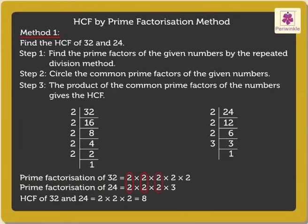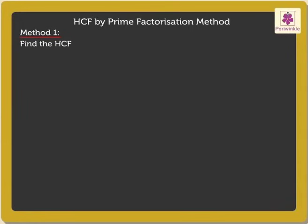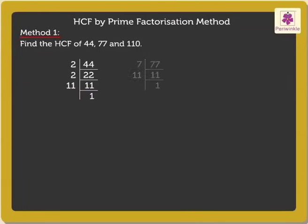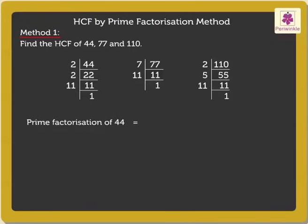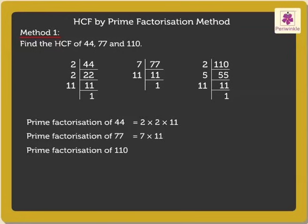Let us take another example. Find the HCF of 44, 77, and 110. First, we find the Prime Factorization of all these numbers individually by the repeated division method. We get the Prime Factorization of 44 as 2 × 2 × 11, 77 as 7 × 11, and 110 as 2 × 5 × 11.